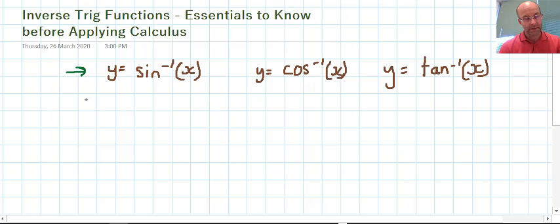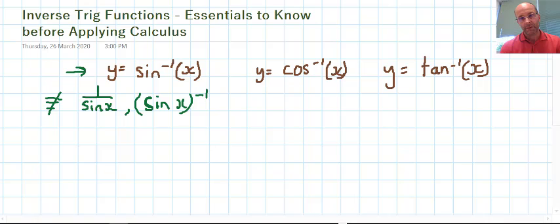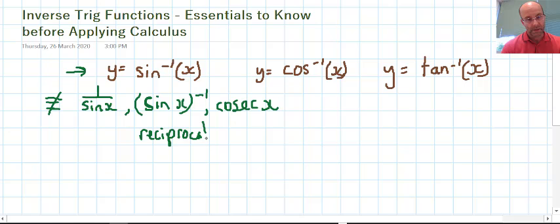Now, what these are and are not, I'm going to use inverse sine for the examples. These things are not the same as, not equivalent to, using sine. That is not equivalent to 1 over sine x. It's not equivalent to sine x to the power negative 1, hence it's not equivalent to cosec x. These are all reciprocal functions, and they're not inverse trig functions.